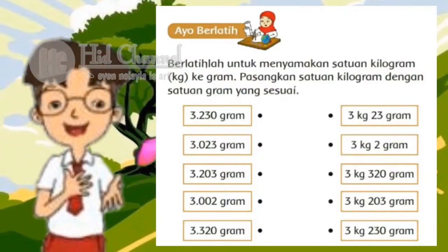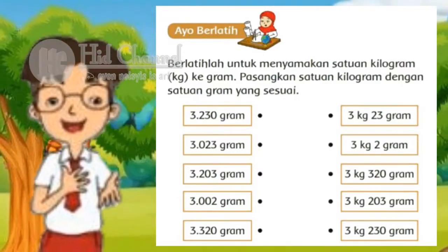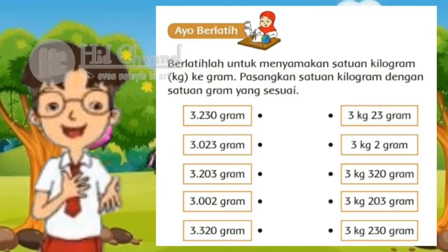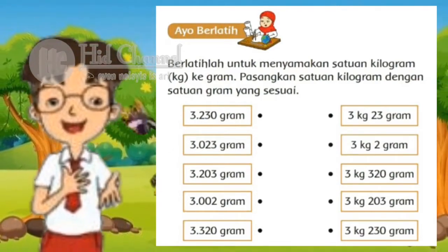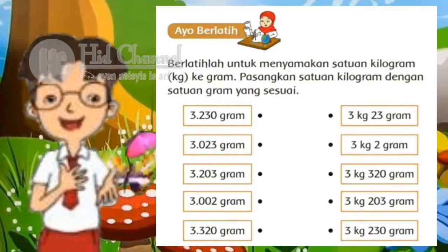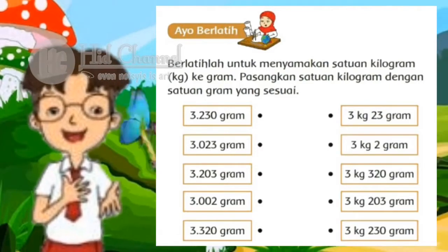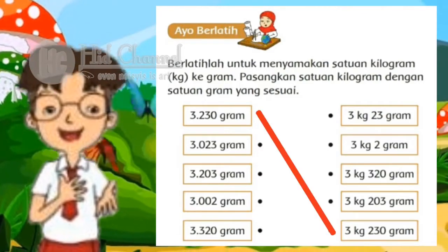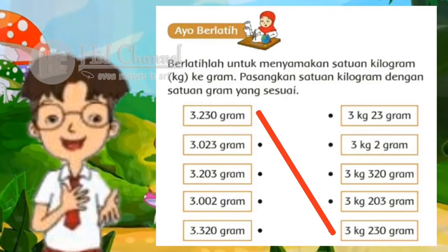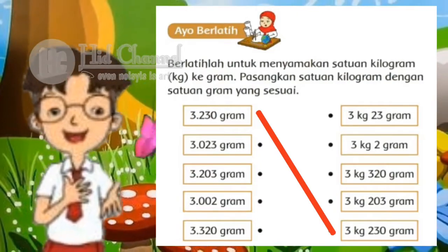Berlatihlah untuk menyamakan satuan kilogram ke gram. Pasangkan satuan kilogram dengan satuan gram yang sesuai. Yang pertama, 3230 gram. Coba kita cari pasangan yang sesuai. 3000 gram itu sama dengan 3 kilogram, sehingga yang sesuai adalah 3,230 gram. Silahkan untuk yang selanjutnya, kalian coba secara mandiri.